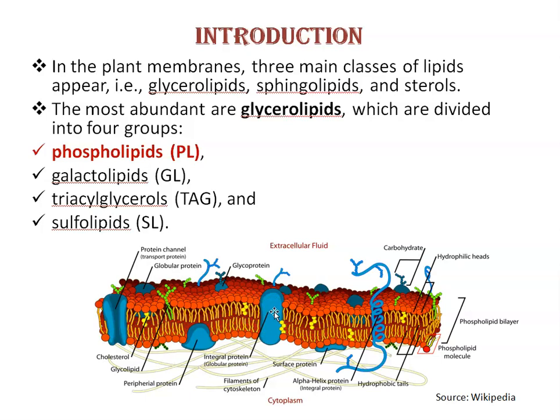Regarding lipids, in the plant cell membranes, three main classes of lipids appear: glycerolipids, sphingolipids, and sterols. The most abundant are glycerolipids. Glycerolipids have at least one hydrophobic chain linked to a glycerol backbone in an ester or ether linkage.